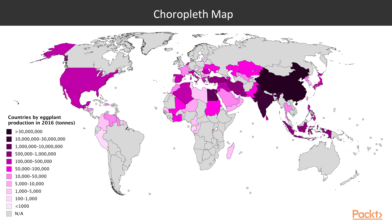Last but not least we are going to see the choropleth map. A choropleth map comes from the Greek word 'horos' which means area or region, and 'plethos' which means multitude. It is a thematic map in which areas are shaded or patterned in proportion to the measurement of the statistical variable being displayed on them, such as population density or per capita income. Choropleth maps provide an easy way to visualize how a measurement varies across a geographical area or show the level of variability within a region.